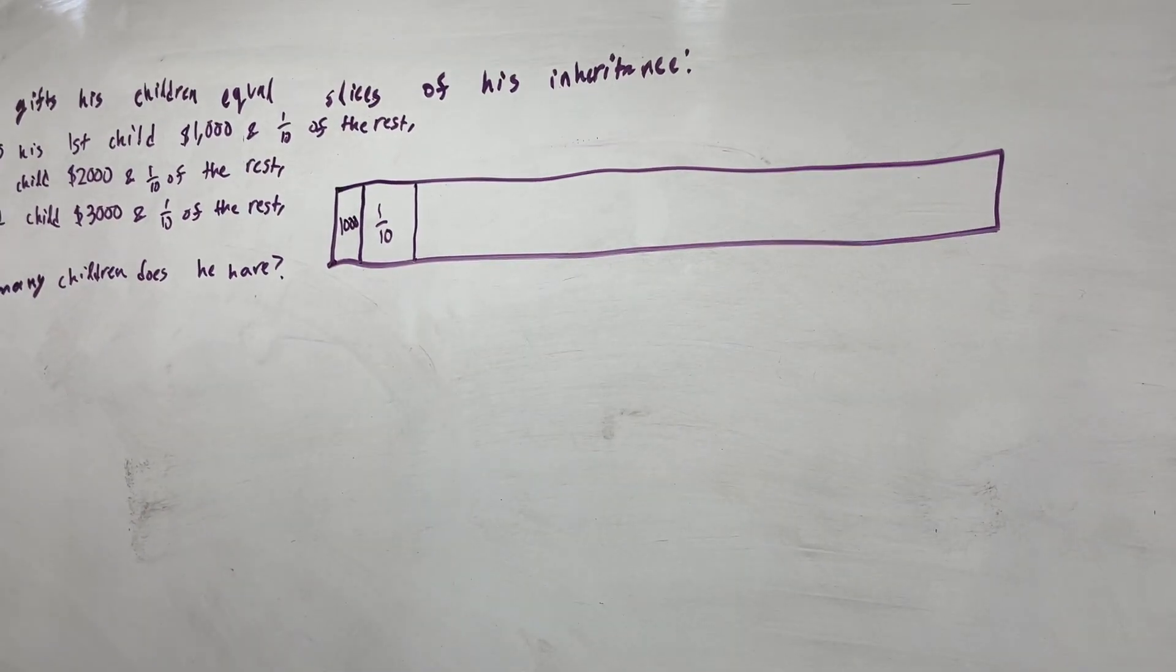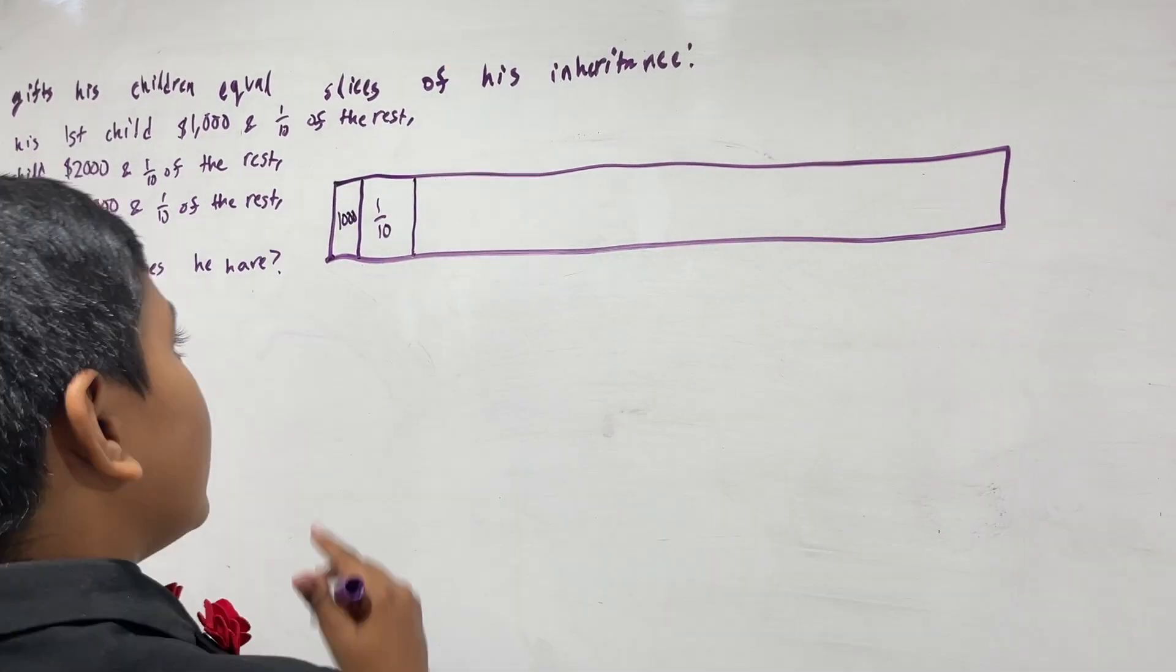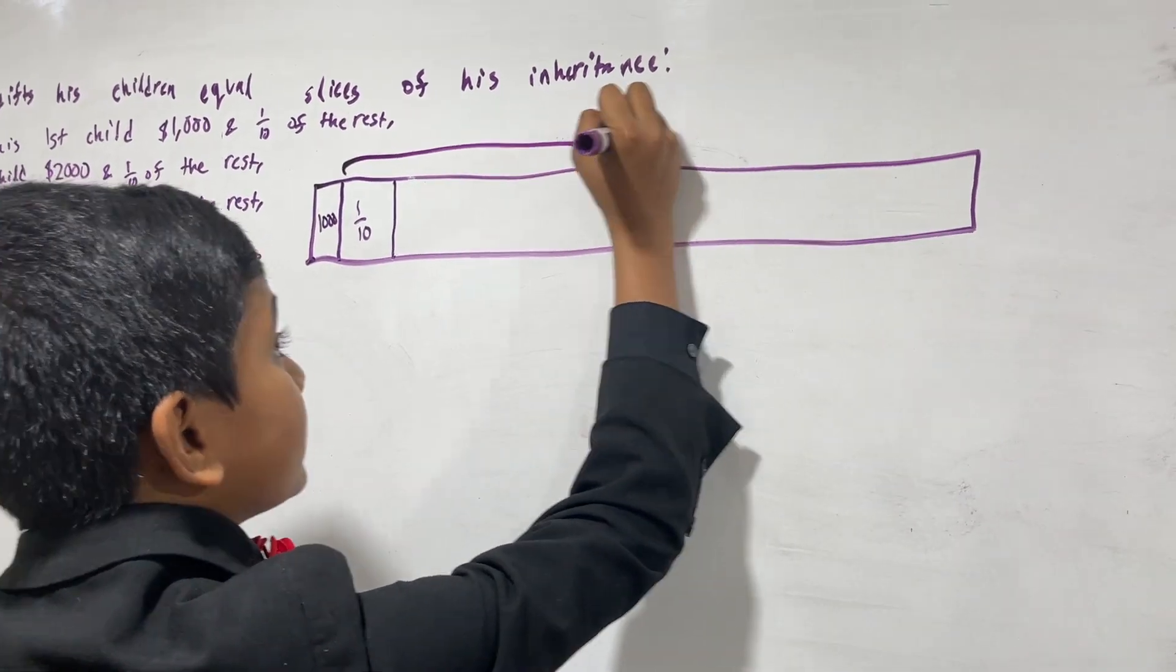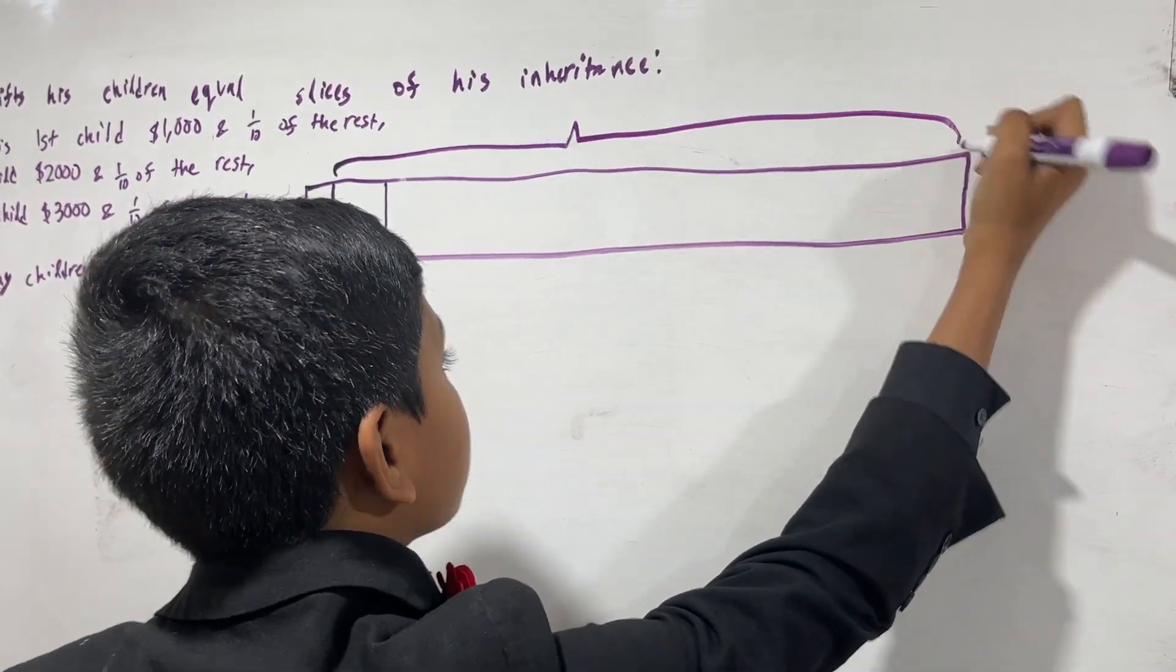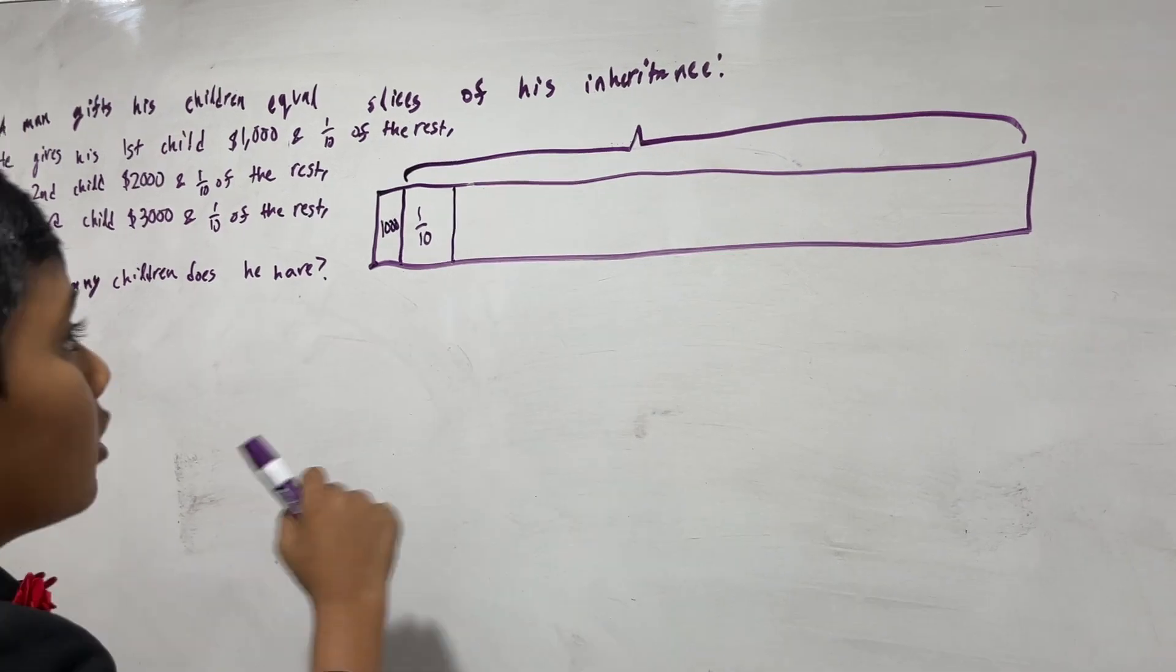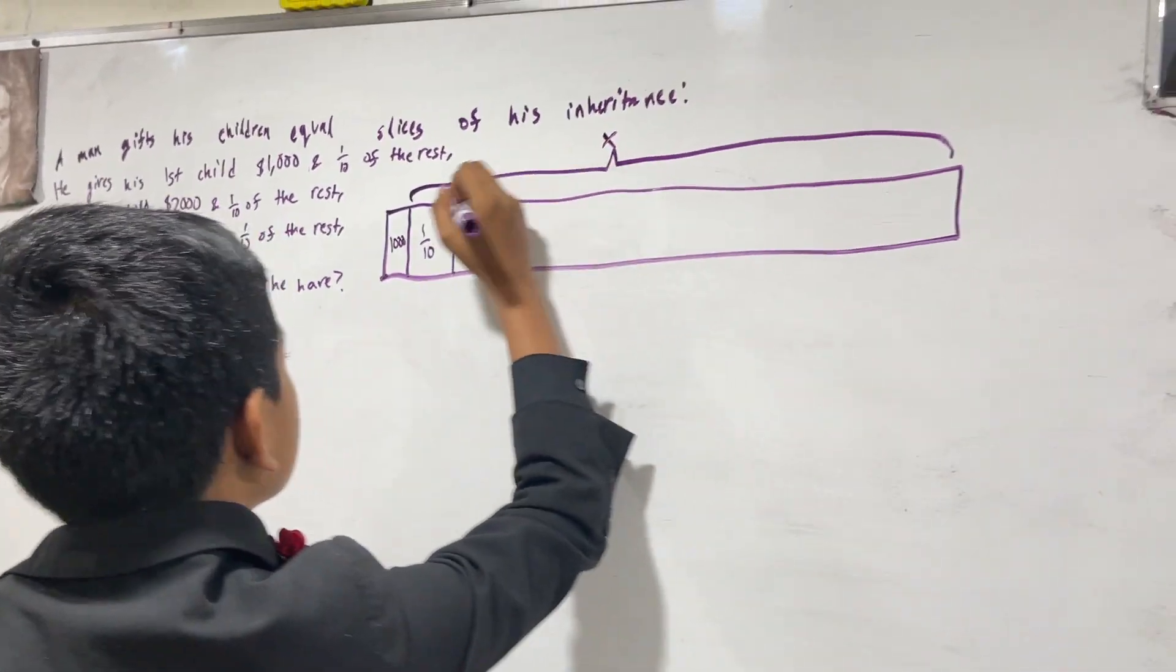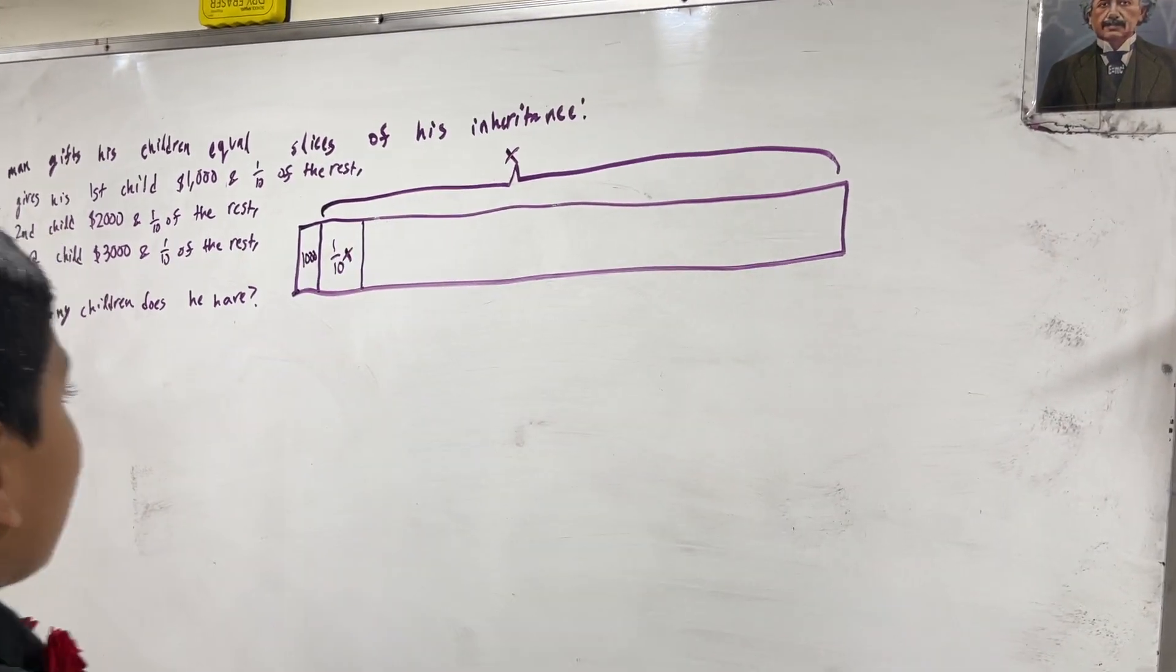So, what I'm going to do is I'm going to call the rest of the man's inheritance after this one thousand dollars, X. So, this is one tenth of X.